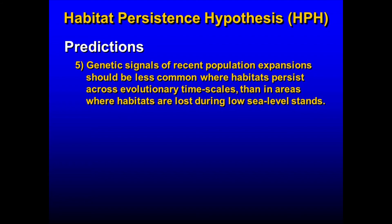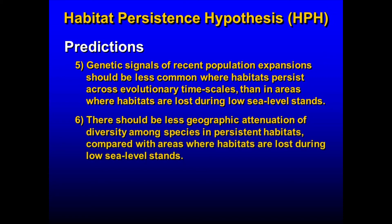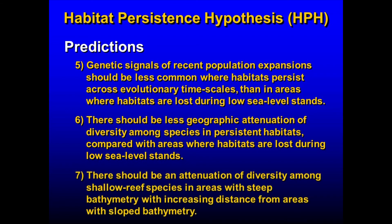There should be less geographic attenuation of diversity among species in persistent habitats compared with areas of habitats that are lost during low sea level stands. As we have observed, there seems to be less emphasis on this eastward attenuation in diversity down deep and among habitats that persist as opposed to habitats that get extinguished every 100,000 years. Related to that, rather than a simple west to east attenuation, there should be attenuation of diversity among shallow reef species in areas with steep bathymetry with increasing distance from areas of sloped bathymetry.